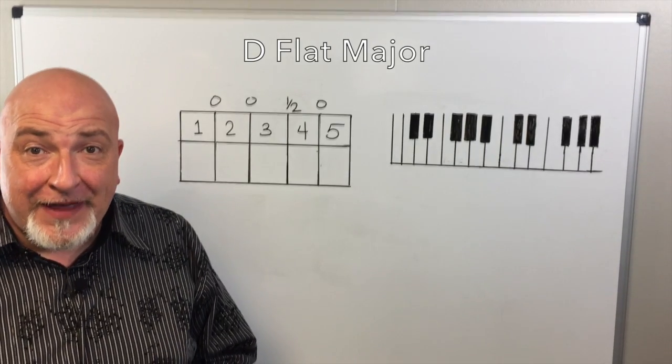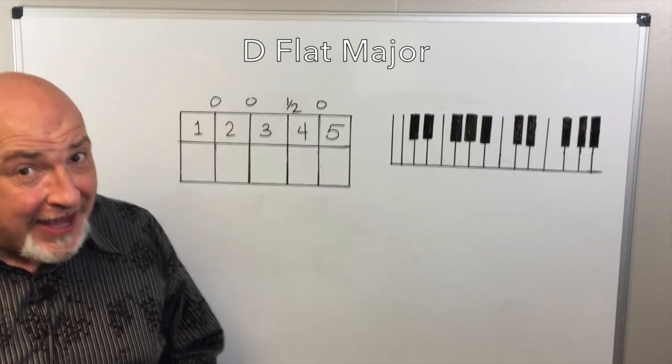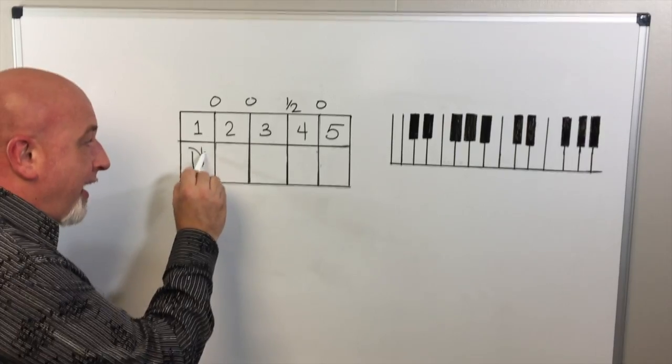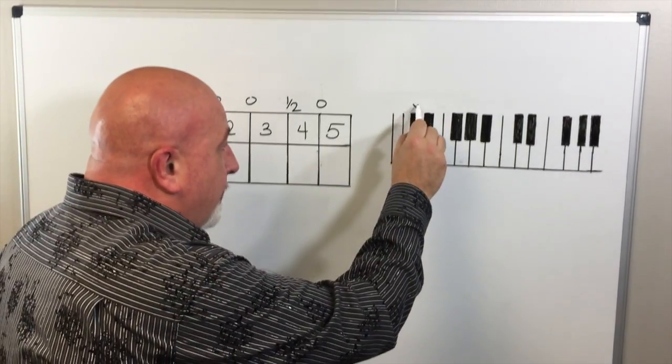Today we're going to build the D-flat major five finger position and its tonic triad. We'll start with our first position on D-flat. We'll go ahead and we'll X our keyboard.